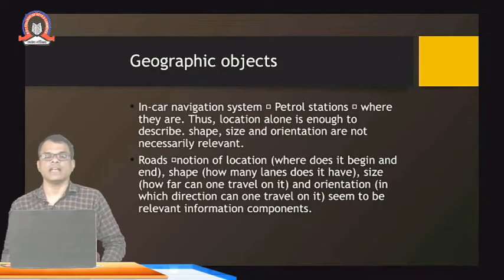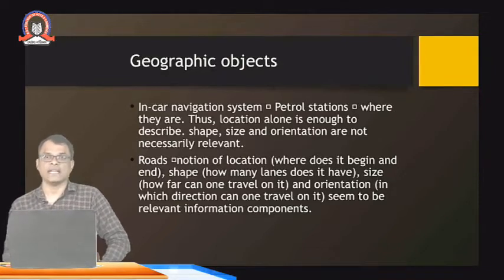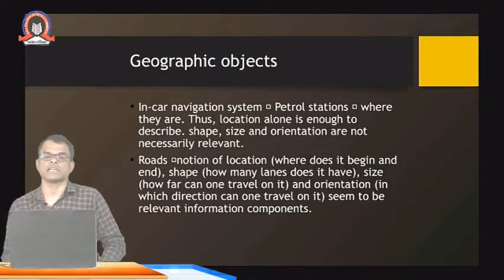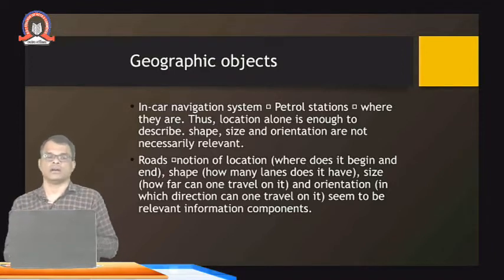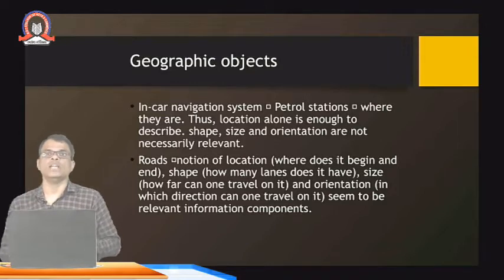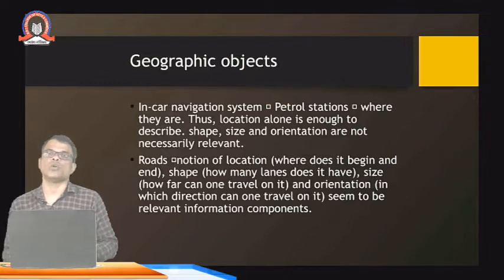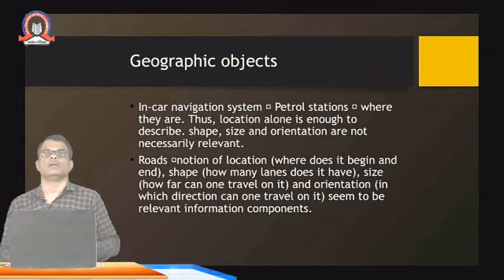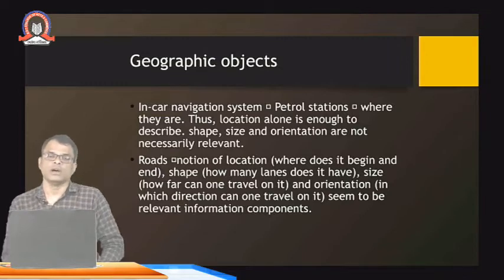For example, in a car navigation system for petrol stations, only location is important — shape, size, and orientation are not necessarily relevant. So in a car navigation system, if we are considering a petrol station, only the location of that petrol station matters; other factors are not important. You can use location alone as the important parameter.